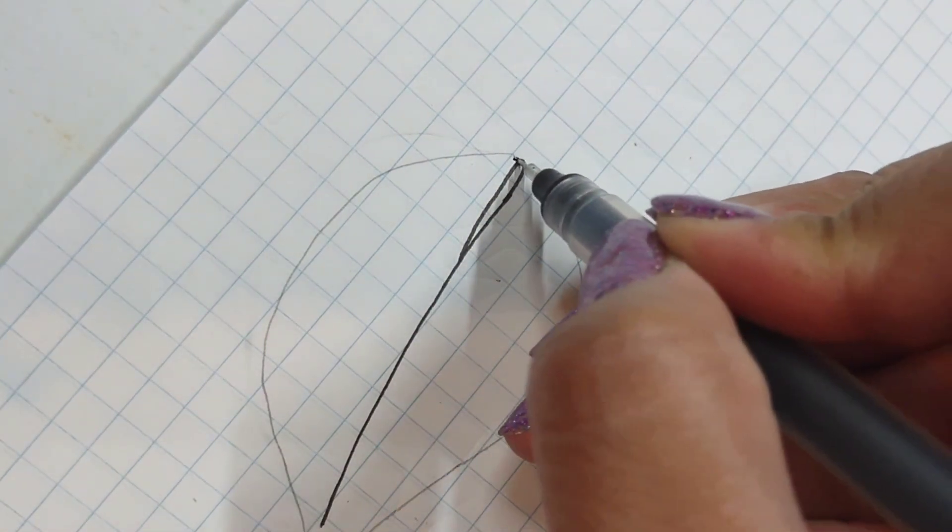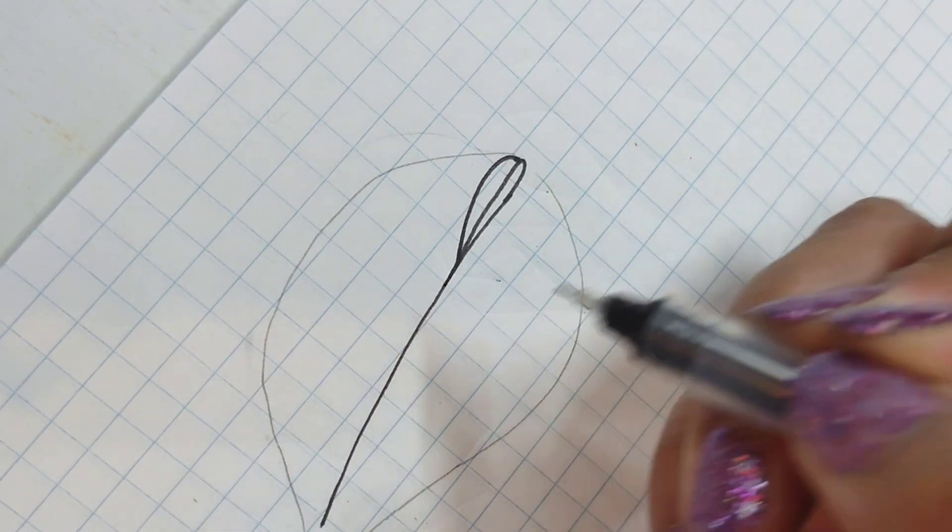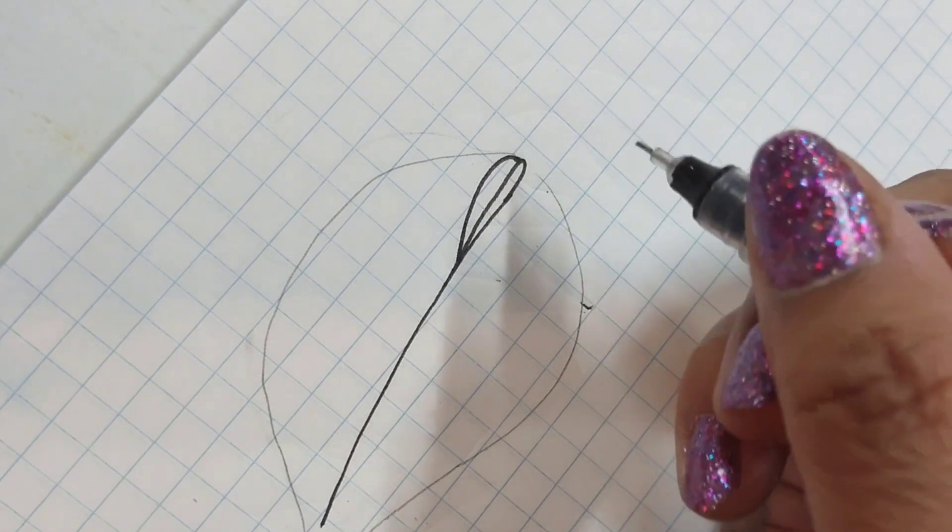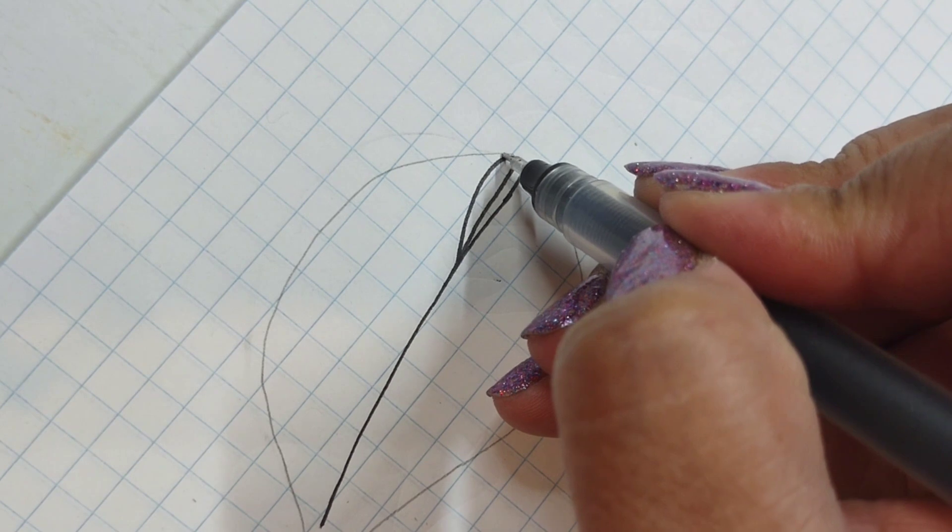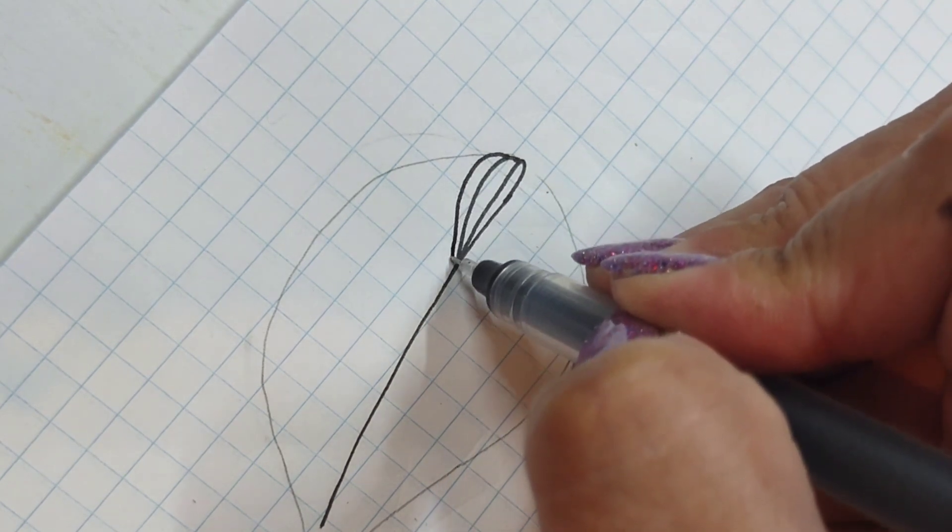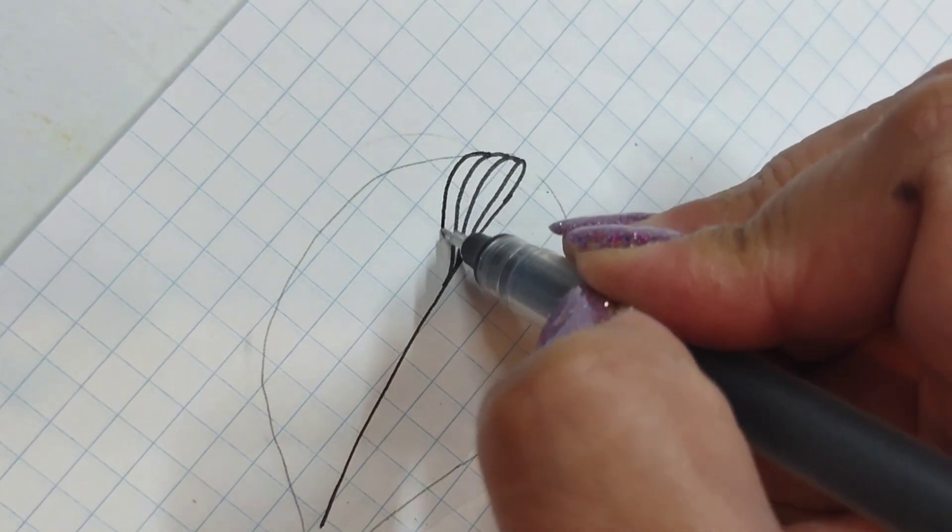And I'm going to start by making my first line from the outside. I'm going to curve it heading towards that inner line. And then I'm going to make that same line, but I'm going to continue repeating it. So here I'm going to start at the outside, curve it, and head in. Outside, curve it, and head in.